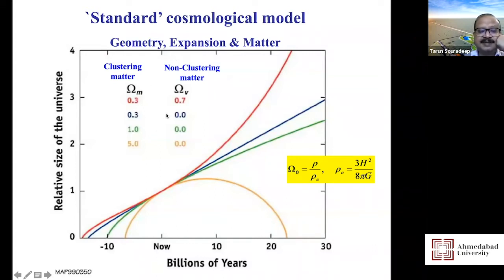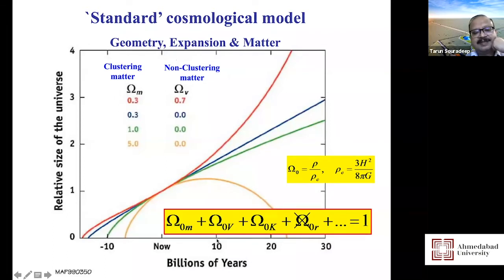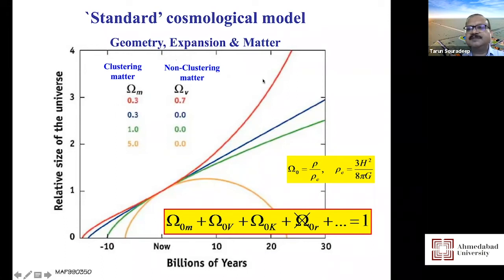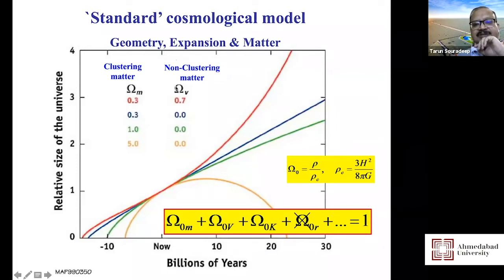The equations become very simple in this universe. You need to know how much ordinary matter there is — matter that clusters under gravity — what the curvature of space is, and whether there is matter that does not cluster under gravity. Known physics actually includes things like vacuum energy seen in the Casimir effect, which doesn't cluster under gravity, as well as Einstein's cosmological constant.